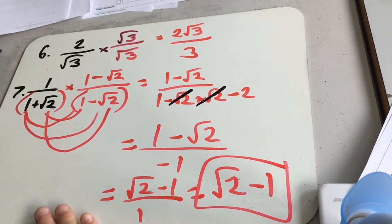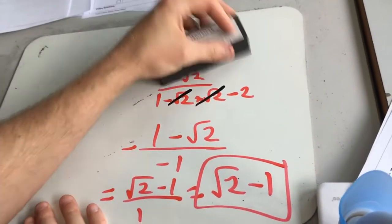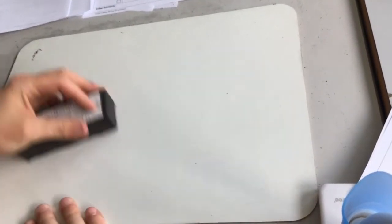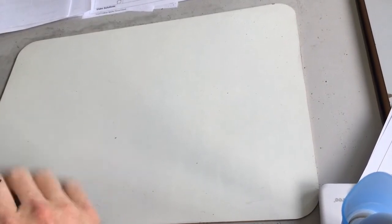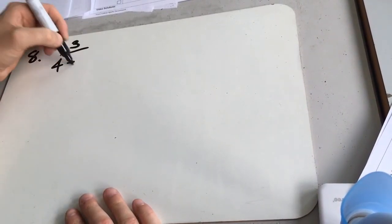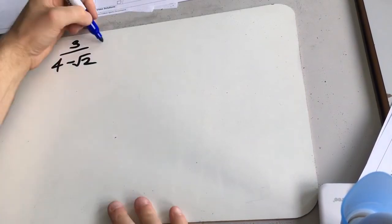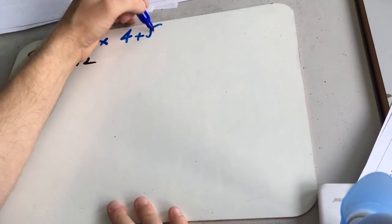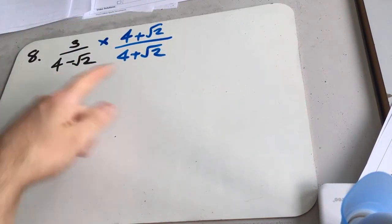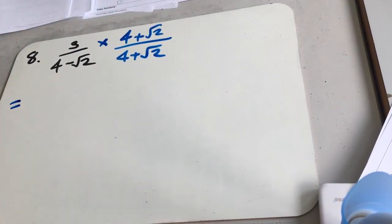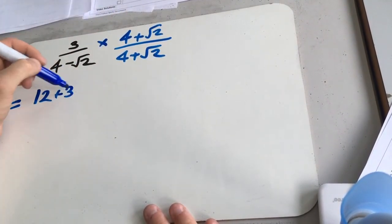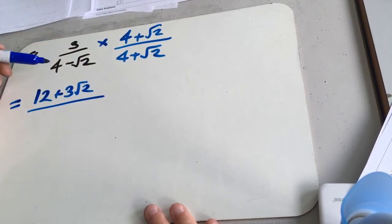Last one, question 8. We've got 3 over 4 minus root 2. So to rationalise this, we're going to times through by 4 plus root 2 over 4 plus root 2. Again, we've got to be careful of how we times it out. So on the top, 3 times 4 is 12. 3 times root 2 is 3 root 2. On the bottom, 4 times 4 is 16.